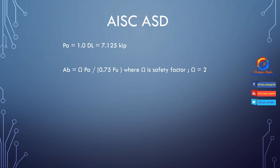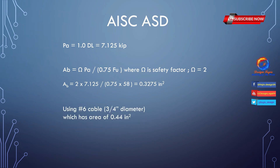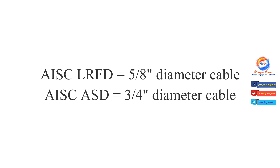For AISC ASD, the service load Pa = 1.0 × Dead Load. The required cable area is: Ab = (Ω × Pa) / (0.75 × Fu), where Ω = 2 is the safety factor in ASD. Using A36 grade steel with Fu = 58 ksi, substituting all values gives Ab = 0.3275 square inches. A number 6 cable has area 0.44 square inches, so use a 3/4 inch diameter cable. As always, AISC ASD gives larger sections than AISC LRFD.